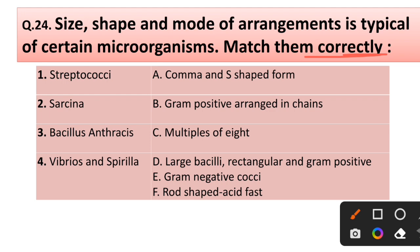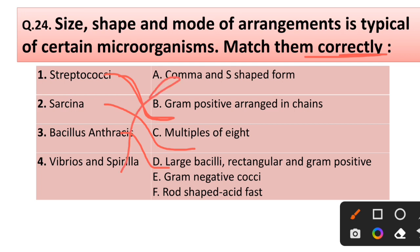Matching: Streptococcus — gram-positive arrangement in chain; Sarcina — multiples of eight; Bacillus anthracis — large bacillus, rectangular gram-positive bacteria; Vibrio and Spirilla — comma and S-form.